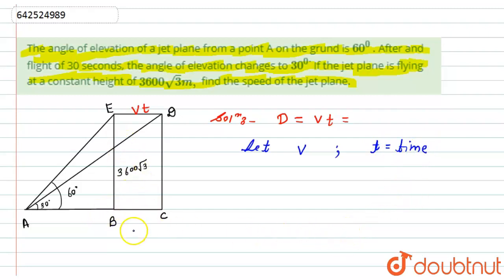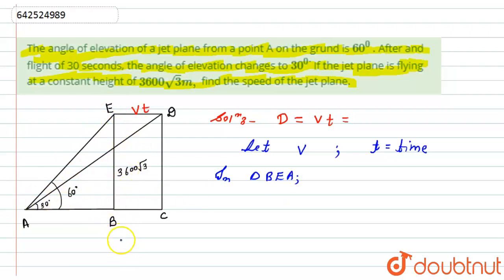Looking at the diagram, two triangles are formed: triangle AEB and triangle ADC. We will work with these triangles to find the velocity of the plane. In triangle BEA, let AB = y. Since opposite sides of the rectangle are equal, BC = vt, and the height EB = DC = 3600√3.